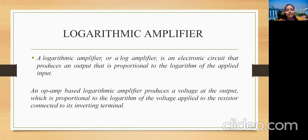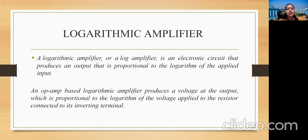An op-amp based logarithmic amplifier produces a voltage at the output which is proportional to the logarithm of the voltage applied to the resistor connected to its inverting terminal. In most cases we use the inverting type amplifier, where the input voltage is provided to the negative terminal of the op-amp. These types — inverting, non-inverting, integrator, differentiator — are discussed in previous videos.